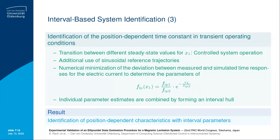Moreover, we have also identified the position-dependent time constant of the electric subsystem in transient operating conditions. Those transient operating conditions contain the transitions between different steady-state values for the position in a controlled system operation, and additionally an actuation of the system based on a sinusoidal reference trajectory for the position variable X1. The corresponding minimization of the deviation between the measured and simulated time responses for the electric current has been carried out by a Nelder-Mead simplex method in order to determine the unknown parameters of the time constant characteristic, which depends on the position X1. Finally, again, we are forming an interval hull over all point-valued estimates in order to obtain a robust model.